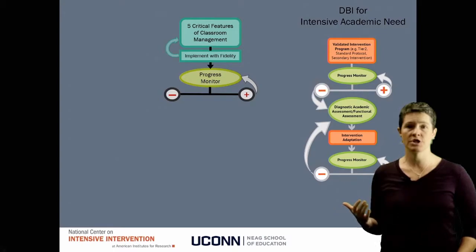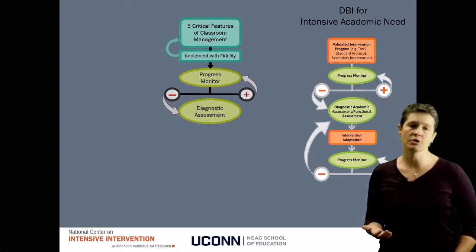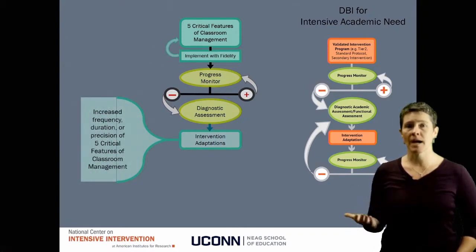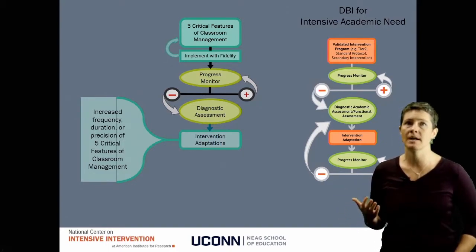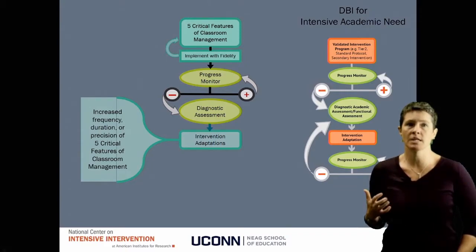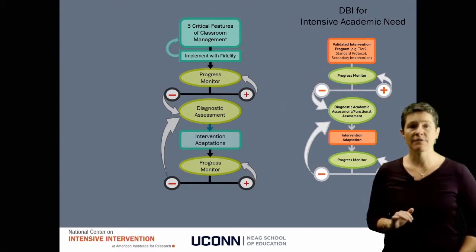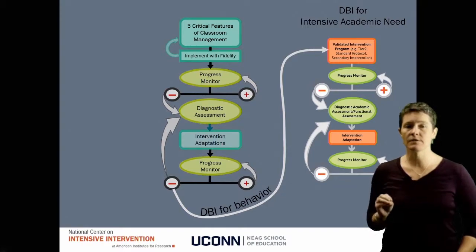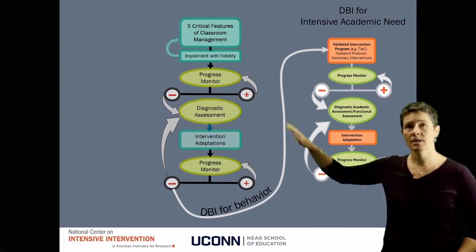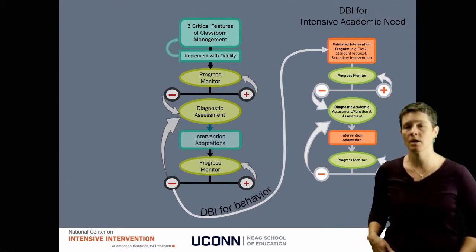If students are responding well, we'll continue to make sure everything is going well. If they're not, we'll need to think more carefully about what the patterns of behavior are telling us about our classroom practices. We'll then adapt those interventions — primarily by increasing the frequency, duration, and precision of those five critical features — until the majority of students are being successful. If that's not sufficient, we'll move into more intensive individualized behavioral support, but that is not the content we will cover in this course. This course covers getting those initial features in place, ensuring fidelity, and intensifying them until the majority of kids can be successful.